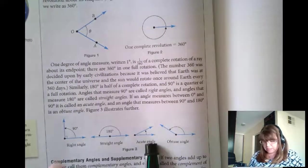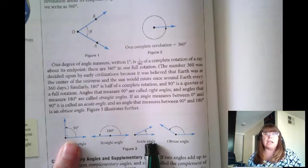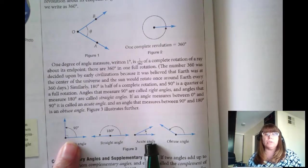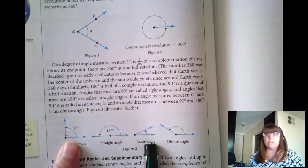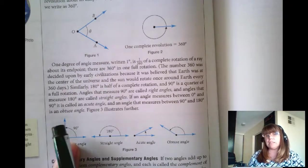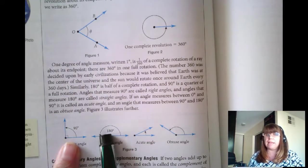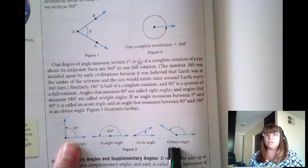Angles that are smaller than 90 are called acute angles.